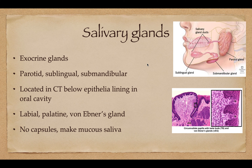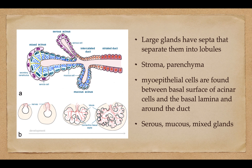These salivary glands don't have any capsule — all they do is make saliva. There are large glands that have septa, and those separate into the lobules. The myoepithelial cells are found between the basal surface of the acinar cells and the basal lamina around the duct. Here's the duct, here are the serous cells on the edge, the mucus, the acini, and then there are the canaliculi — this is the mixed acini.